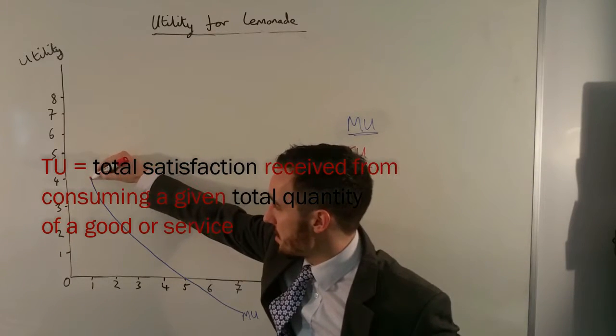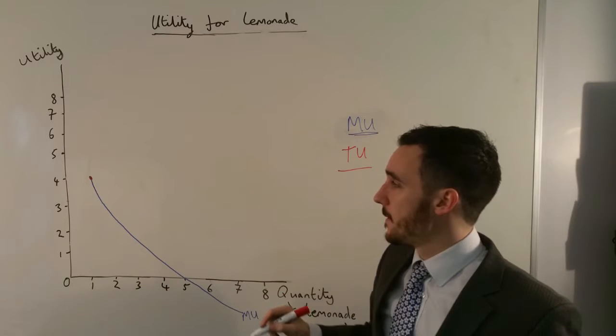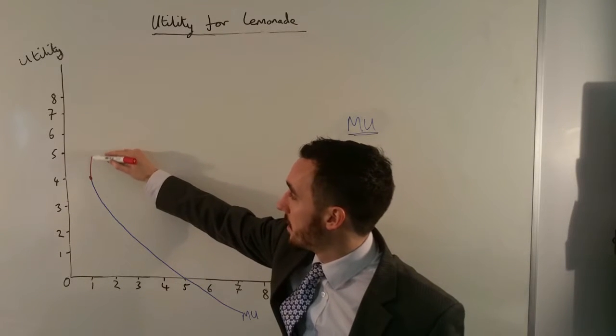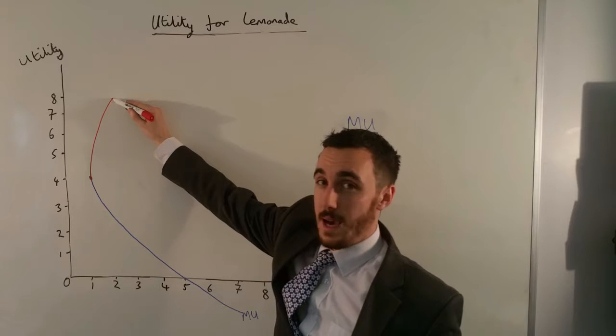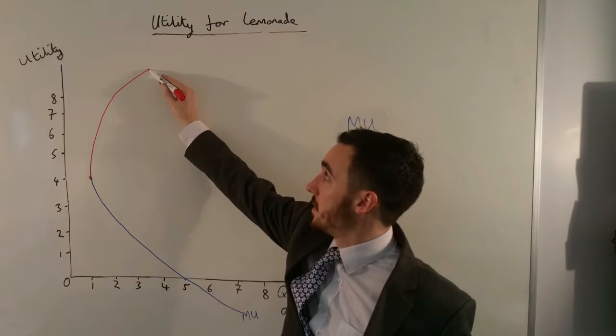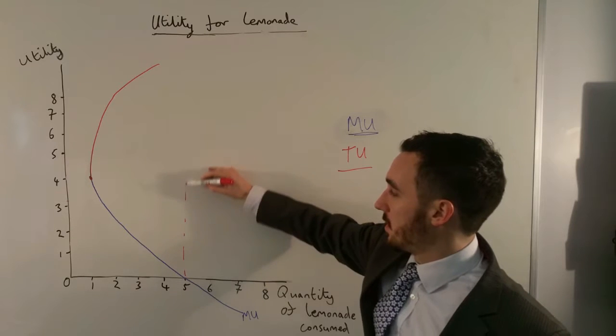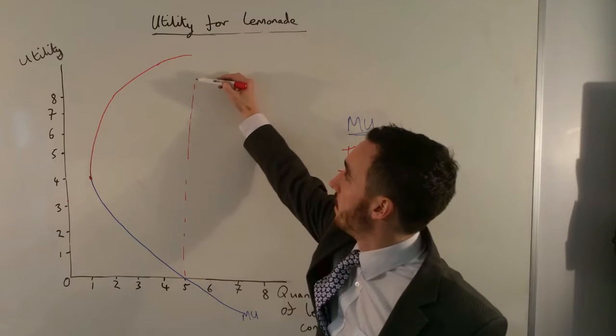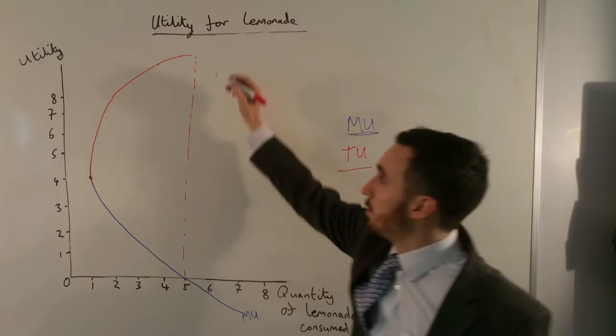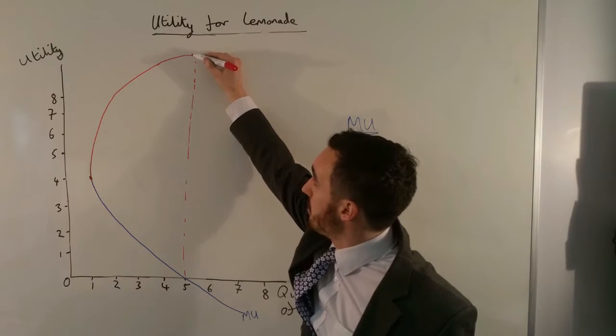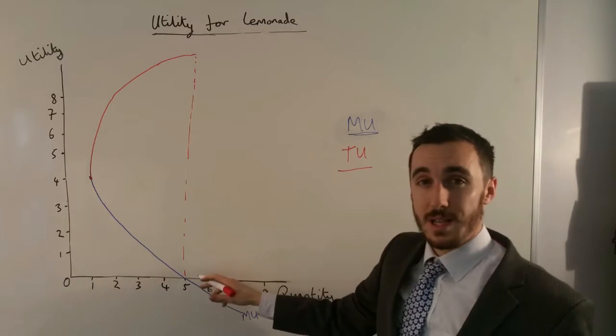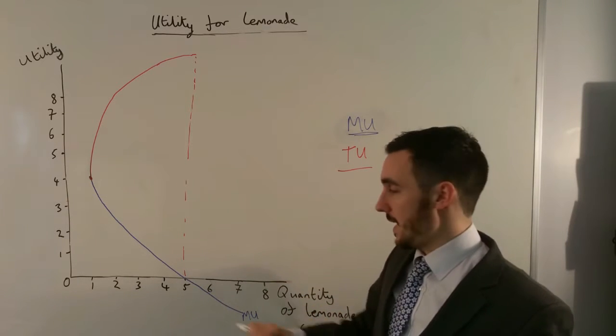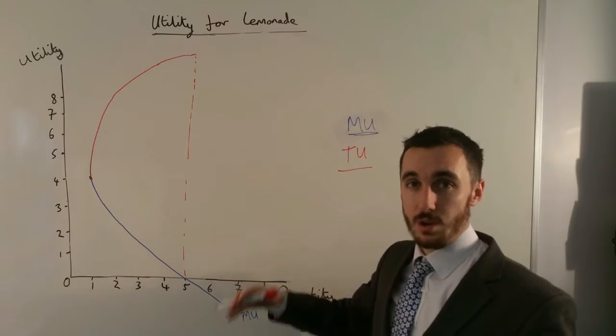So my total utility starts at four for my first glass. My second one adds a little bit more on there, maybe here, and my third up to here, a bit more each time, until we hit my fifth glass of lemonade. And we know that therefore if my marginal utility for my fifth glass of lemonade is zero, it adds on nothing more.